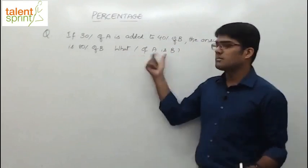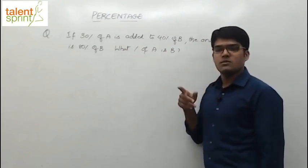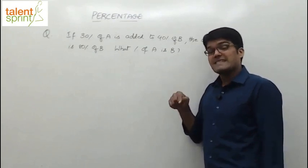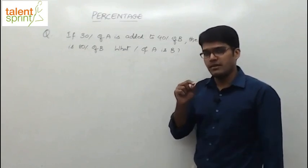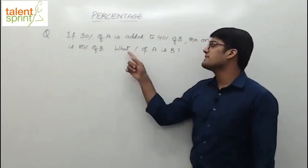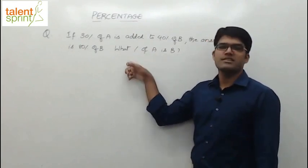We have discussed what percentage of A is B. The formula is B by A into 100. X is what percentage of Y? Y by X into 100. Remember, whatever is followed by 'of', that should come in the denominator. So what percentage of A is B is nothing but B is what percentage of A.